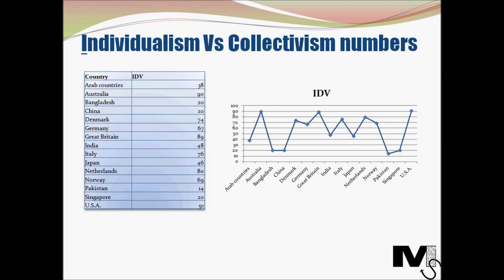Looking at the numbers, it's not surprising that the Western and Eastern worlds exist on opposite ends of the spectrum. Countries like the United States, Great Britain, and Australia are quite individualistic. On the other side, countries like Pakistan, Bangladesh, and China are very collective and community-driven.